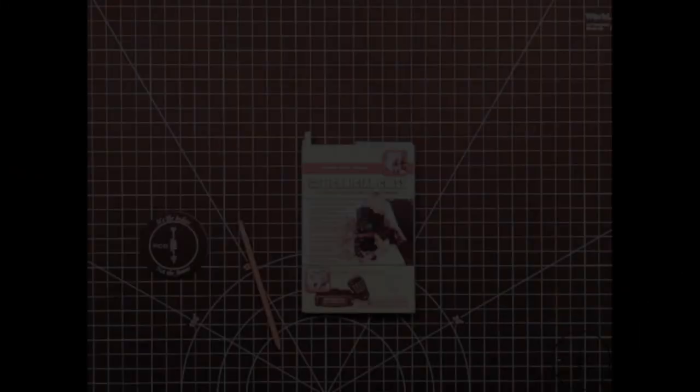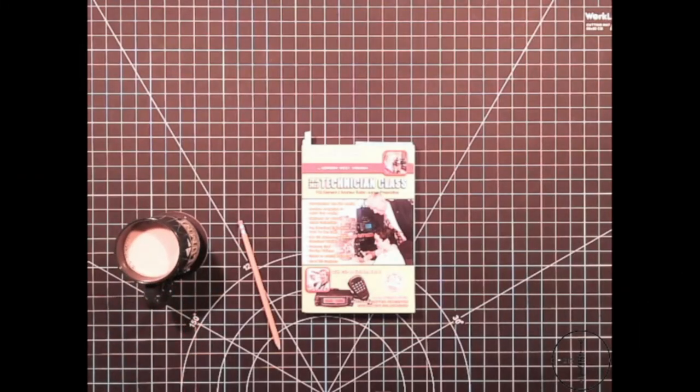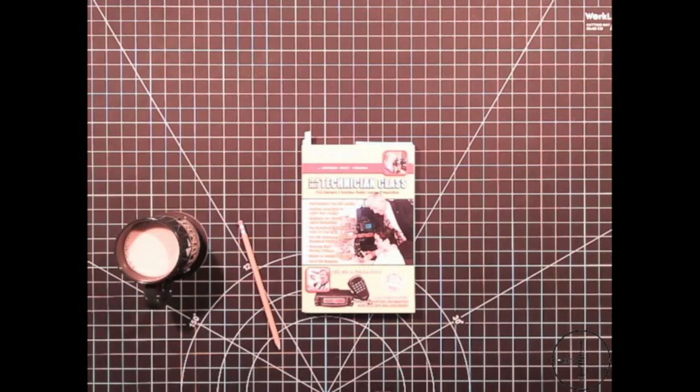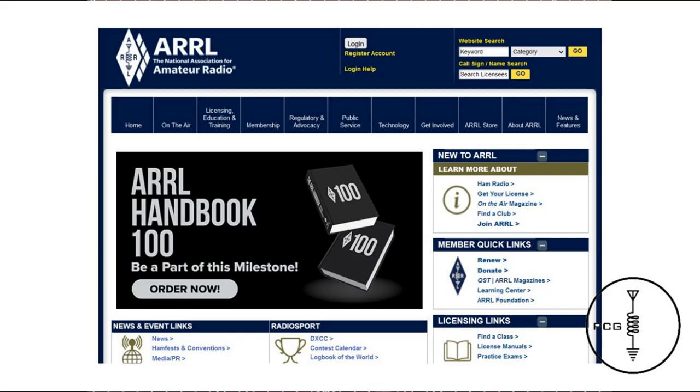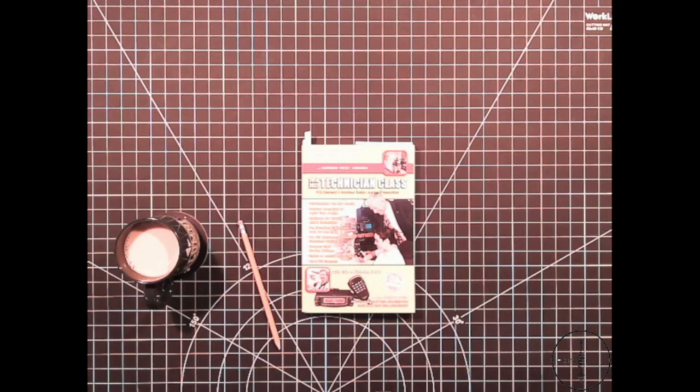Once you're ready to sit for the exam, you can use the ARRL website to search for upcoming classes near you. I'll leave a link to that website in the description below. The FCC has implemented a fee of $35 for all initial licenses, and that fee is in addition to the exam fee of $15, so total fees are $50.